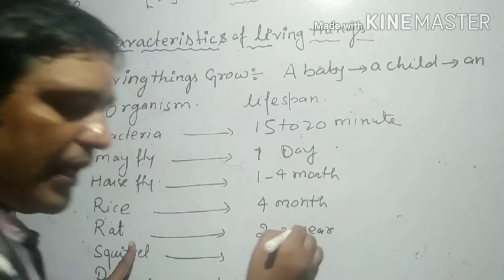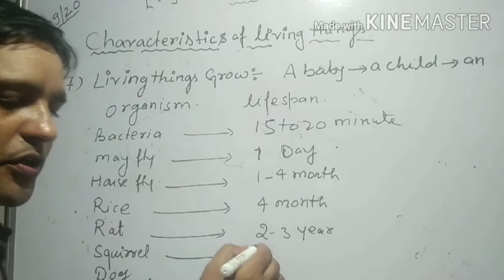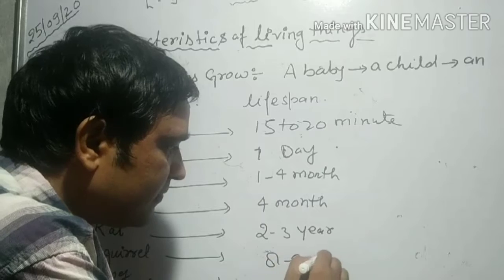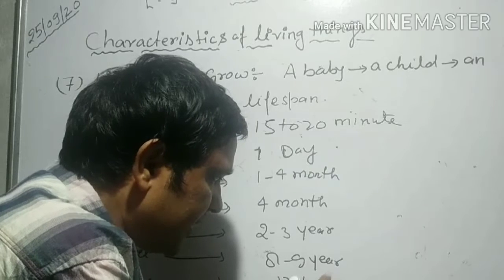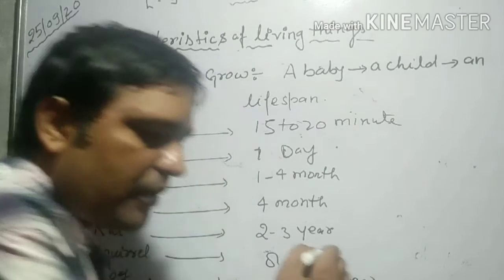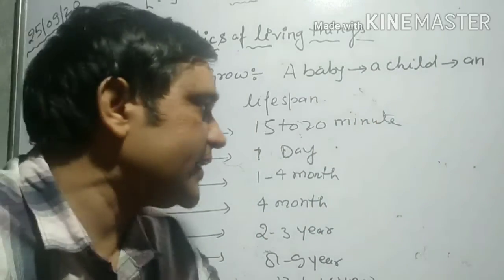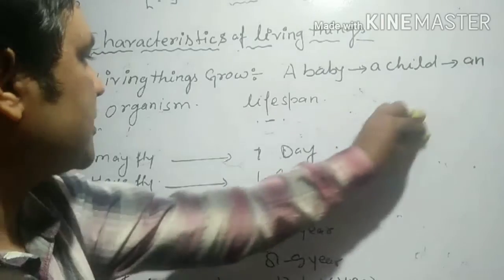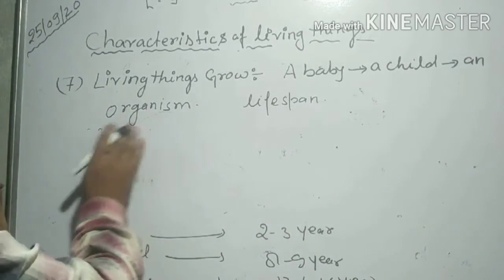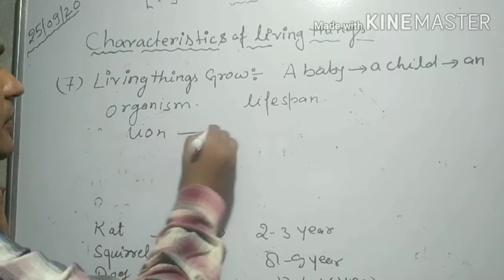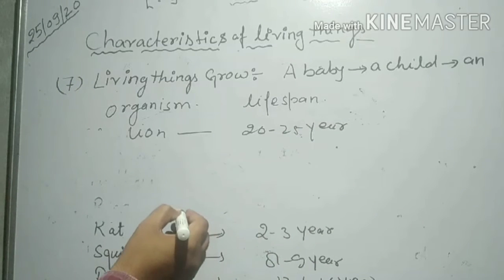The life span of a rat is 2 to 3 years. The life span of a squirrel is 8 to 9 years. The life span of a dog is 12 to 15 years. The life span of a lion is 22 to 25 years.